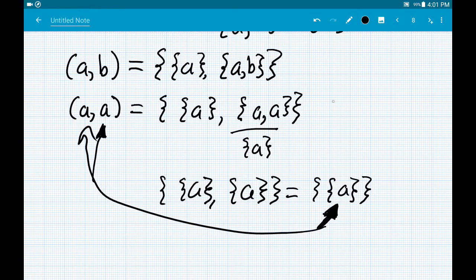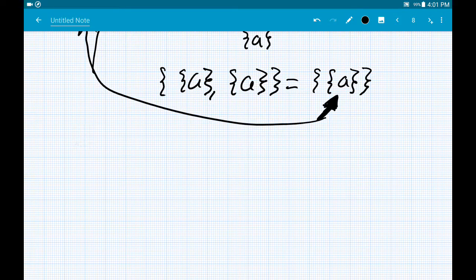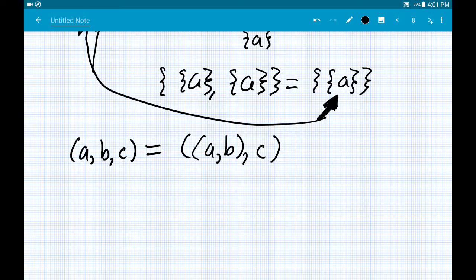But the point is that we have this structure to define the notion of a pair, and from that we can define the notion of a triple, which is the pair of the pair (A, B) together with C, and so on, always choosing to sort of expand this pairing operation in the first coordinate of the pair.